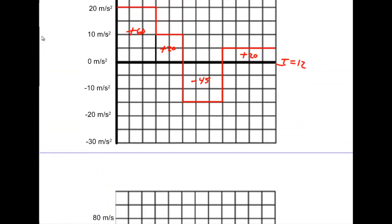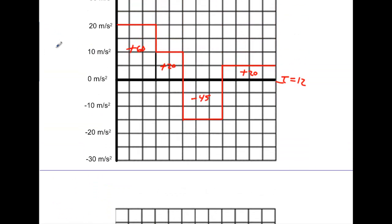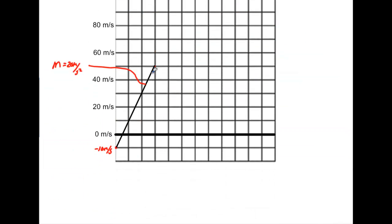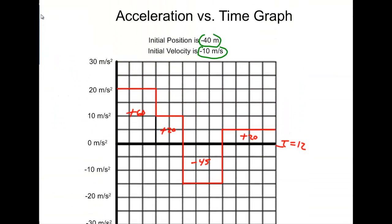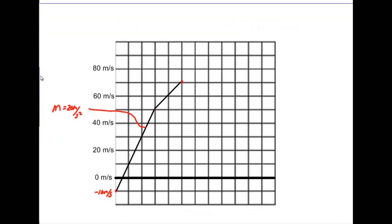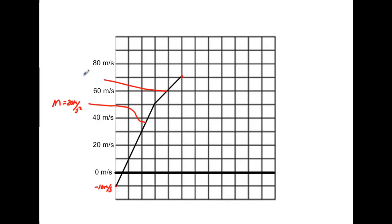Now for the next two seconds, I'm going to add another 20. I had 50, I go up another 20 to 70. My line goes from 50 to 70 over two seconds. The slope should be 10 m/s². We verify: 70 minus 50 is 20, over 2, that gives a slope of 10. So we know that's correct.